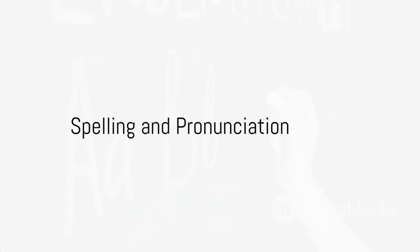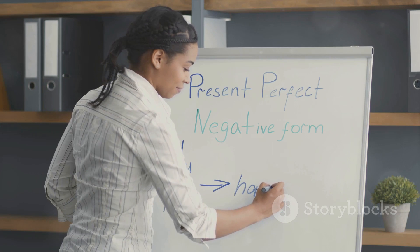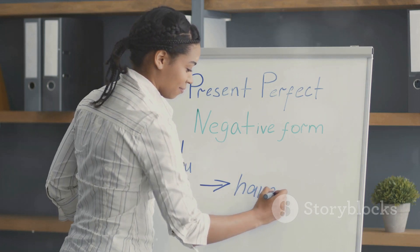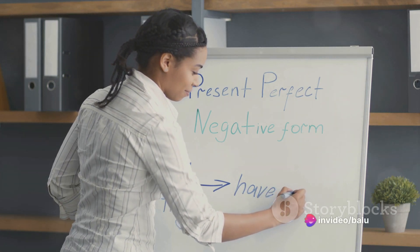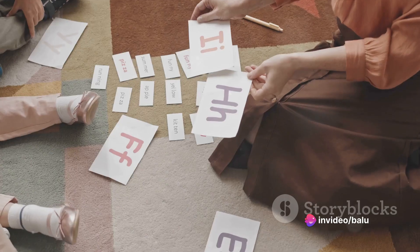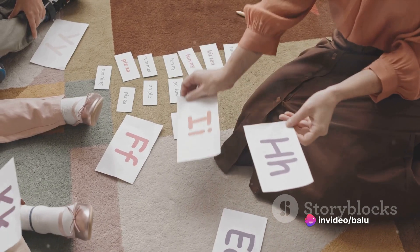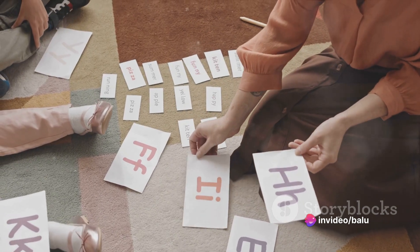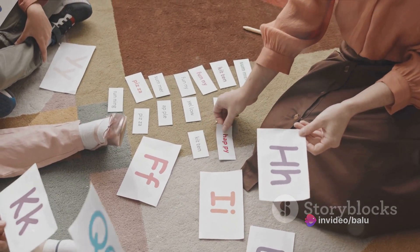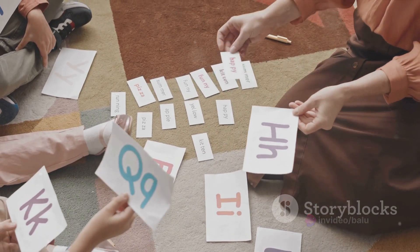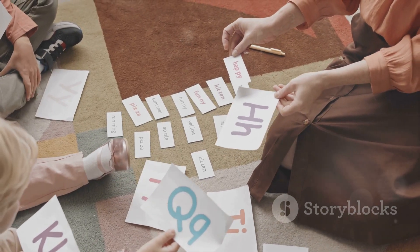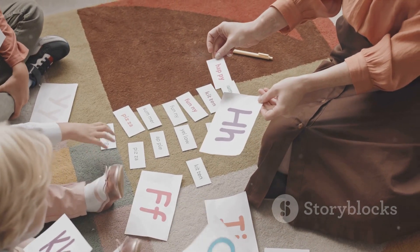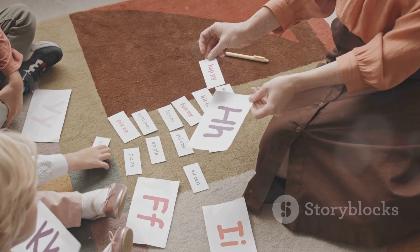Begin by spelling out the word, each letter pronounced clearly: D-E-V-A-S-T-A-T-E. Now say it with me — devastate. That's right, once more: devastate. Now take a moment to observe the phonic script of devastate. The emphasis falls on the first syllable, dev, followed by A and then state. Pronounce it slowly: dev-a-state.